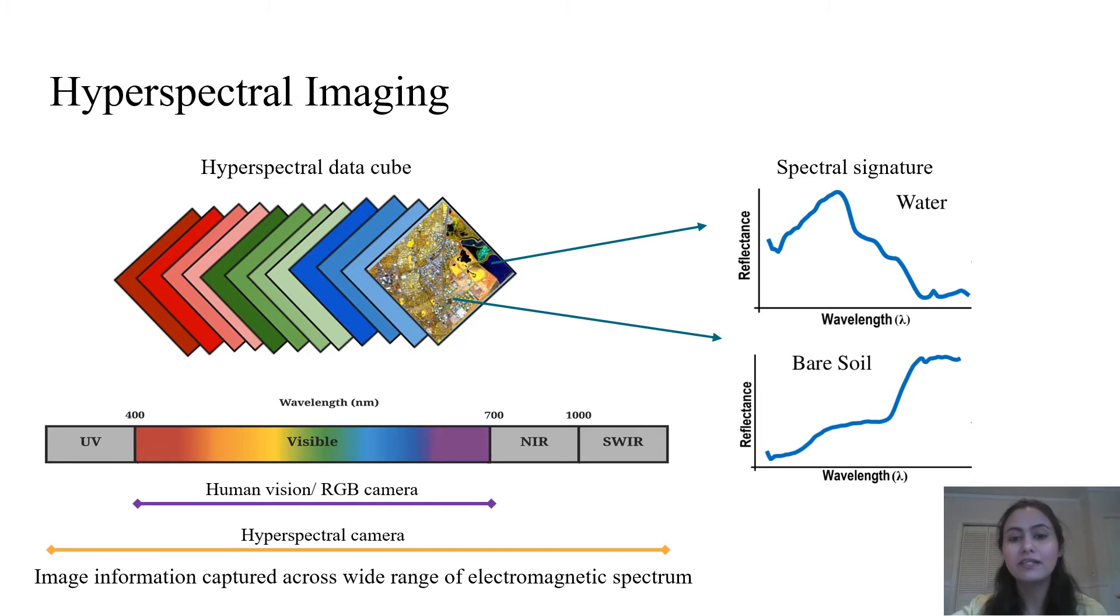For example, signal values in certain wavelength bands corresponding to the presence of soil in a scene differ from the presence of water or rocks.